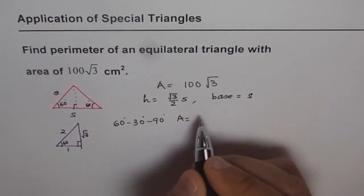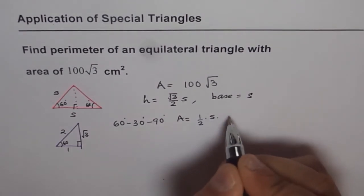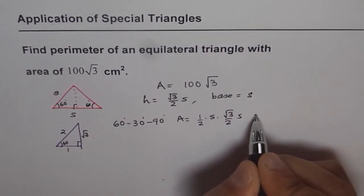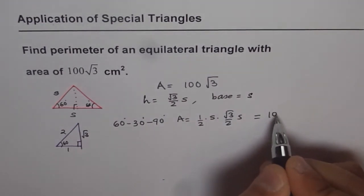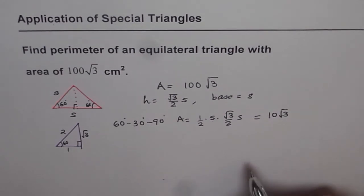Which is 1/2 · s · (√3/2)s. But we are given that area is 100√3. So from here, we can find what s is.